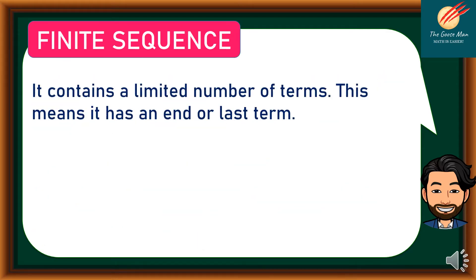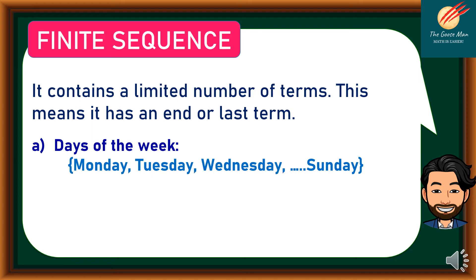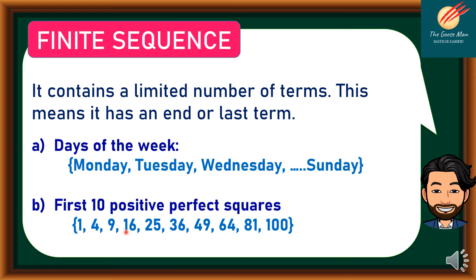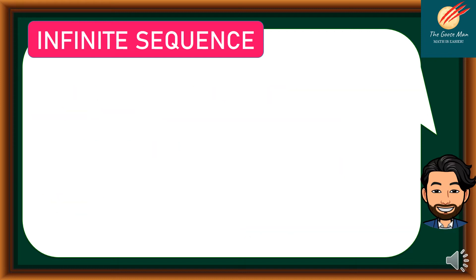If we have a limited number of terms, this means it has a last term — we call this a finite sequence. An example is the days of the week: Monday, Tuesday, Wednesday, and so on until Sunday. Another example is the first ten positive perfect squares: 1, 4, 9, 16, 25, 36, 49, 64, 81, and 100.